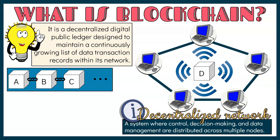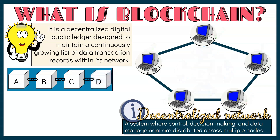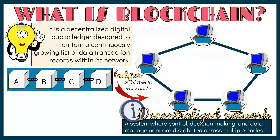Once a transaction is approved, the information is permanently stored and cannot be altered. The ledger is accessible to all participants in the network. Every node that joins a blockchain system receives this ledger and helps validate transactions. As a result, each transaction is shared and the same data is replicated across all nodes in the system.